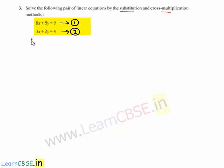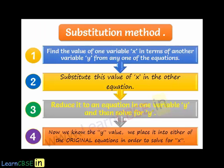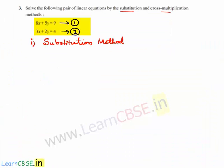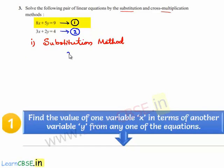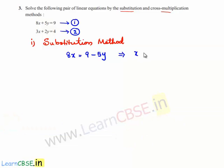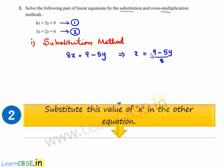The first method is the substitution method. The first equation can be written as 8x is equal to 9 minus 5y, which implies x is equal to 9 minus 5y divided by 8. Now let us substitute the value of x in equation number 2.